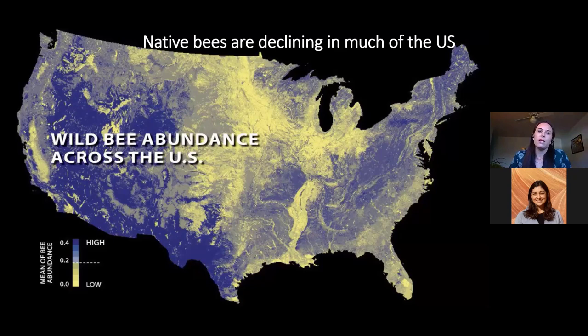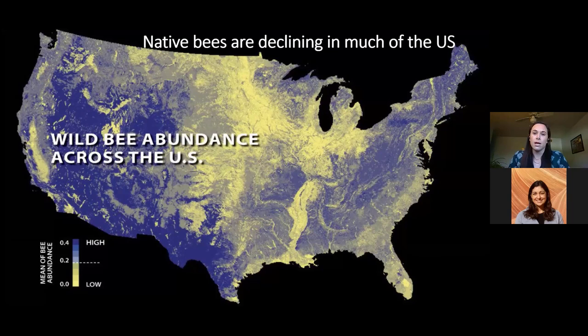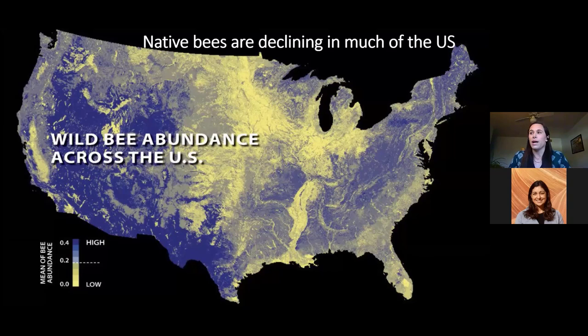Broadly, native bees are not doing very well throughout much of the U.S. This map of the United States shows wild bee or native bee abundance: dark blue indicates high abundance and yellow indicates low abundance. Vast portions of the country fall into that yellow, low-abundance category, and those also happen to be the areas where we have the most agriculture. That's going to be a problem — we need to make sure we have not only honeybees but many other native bees in areas where we're producing most of our agriculture.